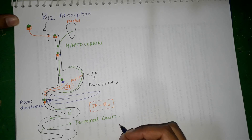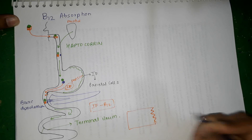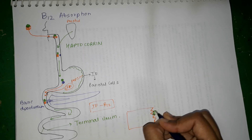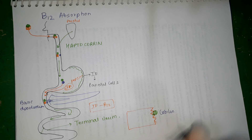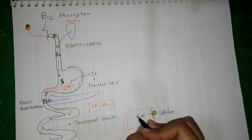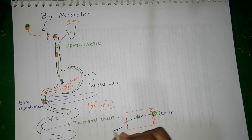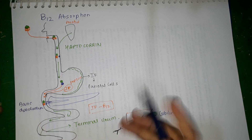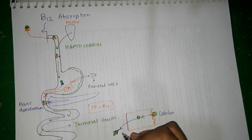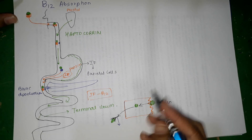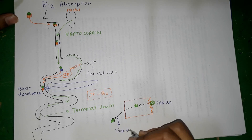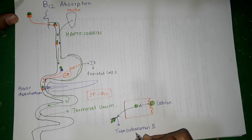The terminal ileum has special cells which are important for absorption. On the luminal side, the cells of the terminal ileum have a receptor called cubilin, and this cubilin helps in the movement of vitamin B12 into the cell. From inside the cell, if vitamin B12 has to move out into the bloodstream, it must be bound to another protein, because without being bound to a protein, vitamin B12 absorption does not occur. This protein to which vitamin B12 is bound for absorption into the blood is called transcobalamin-2. Cobalamin refers to vitamin B12.